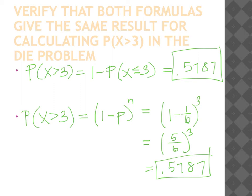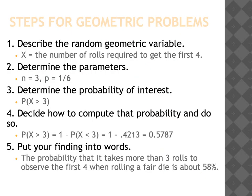Neither of these formulas will be on your formula card. The purpose of this slide is to show how you would answer a question in one coherent stream of thought. As with the binomial setting, describe the random variable first — x is the number of rolls required to get the first four. Define the parameters: we're looking at more than three rolls before the first success, and the probability of success is 1/6. State the probability we're looking for — since it's more than three, x is greater than three. Then calculate and put your finding into words specific to the original question.